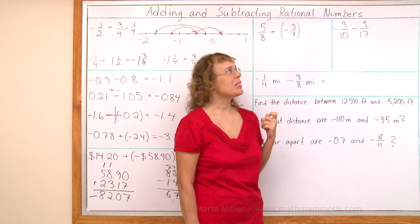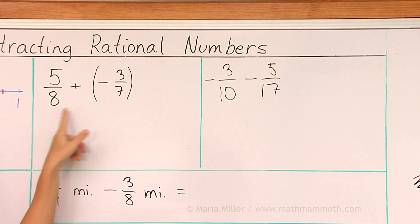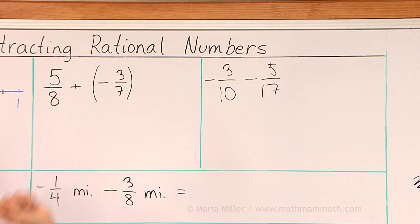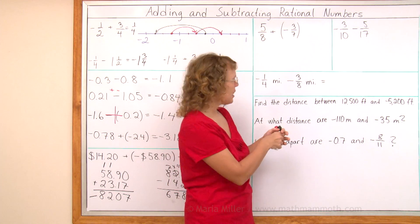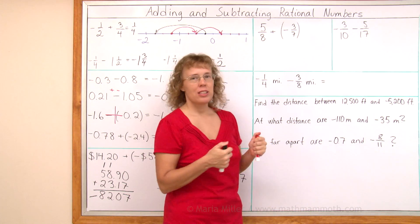Next, we have some fraction problems here. Five-eighths plus negative three-sevenths. Okay, it may look confusing at first, but it really isn't. You have two ways to get started.